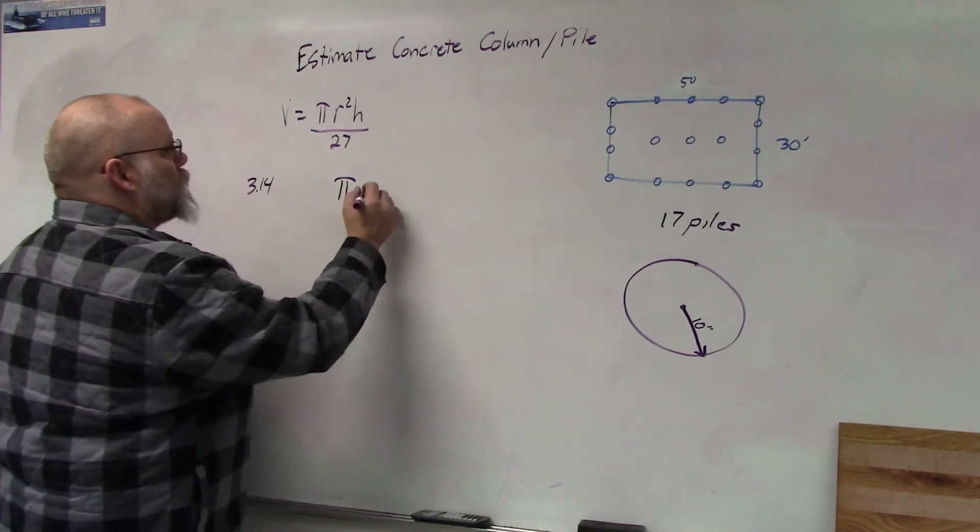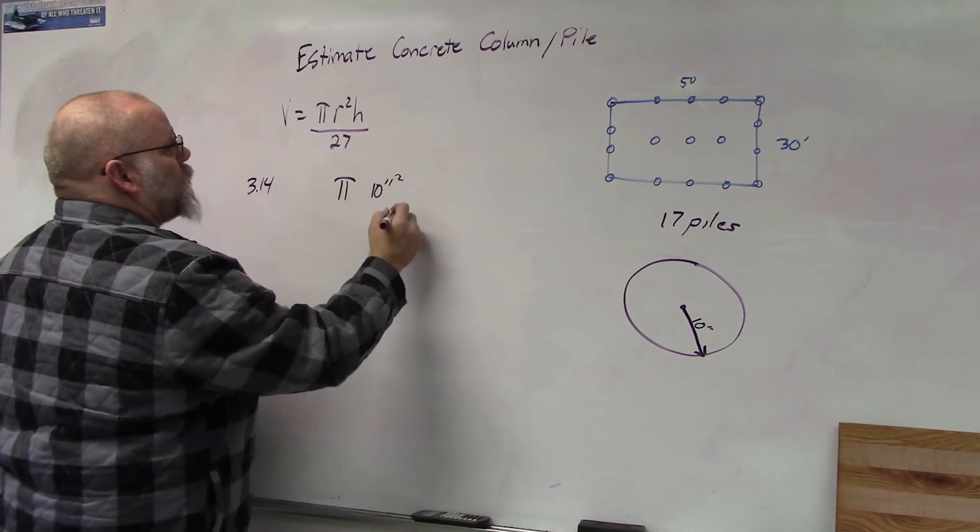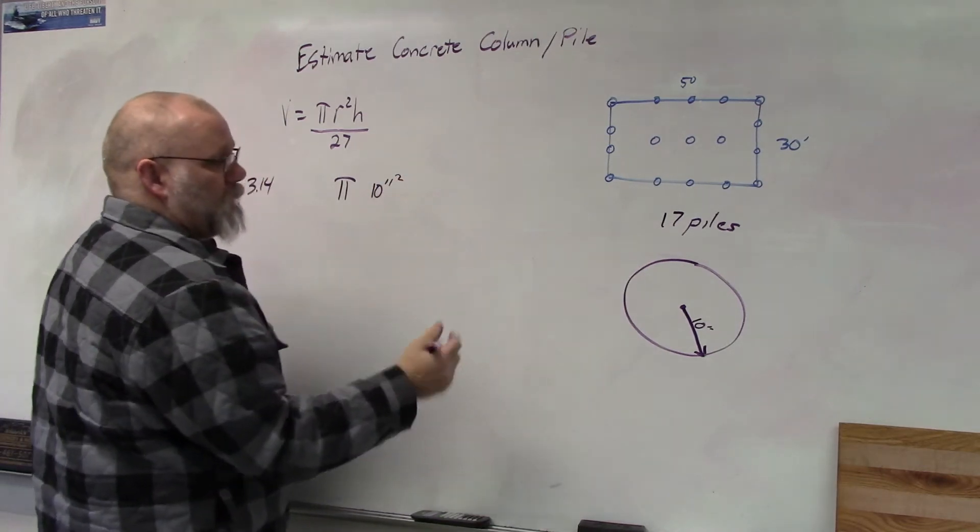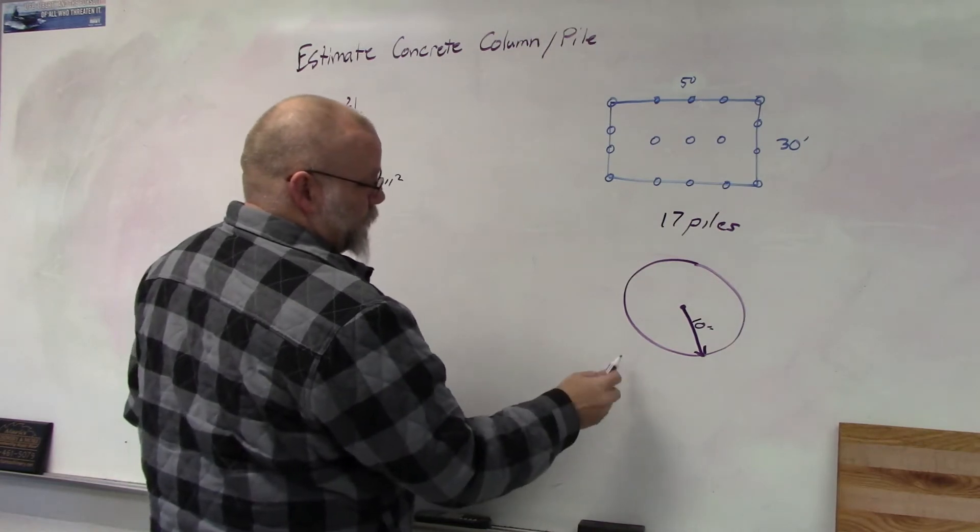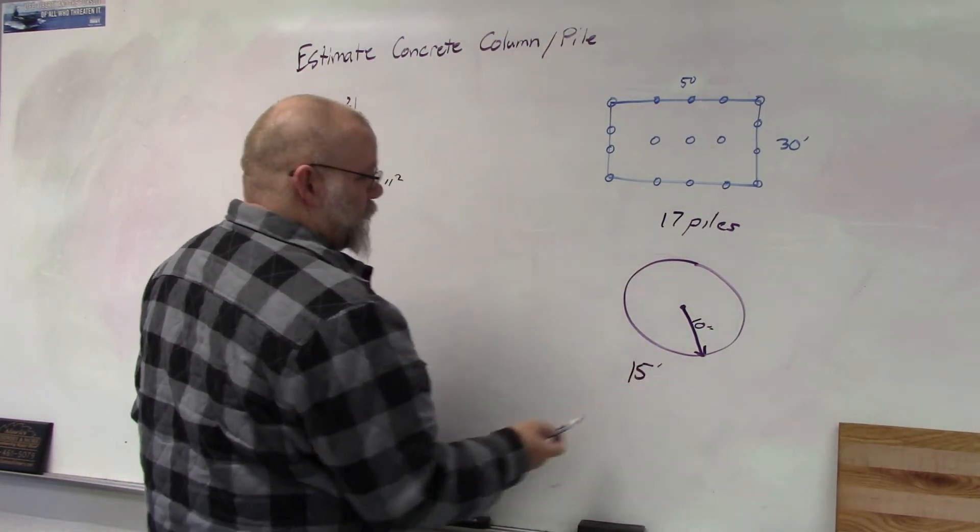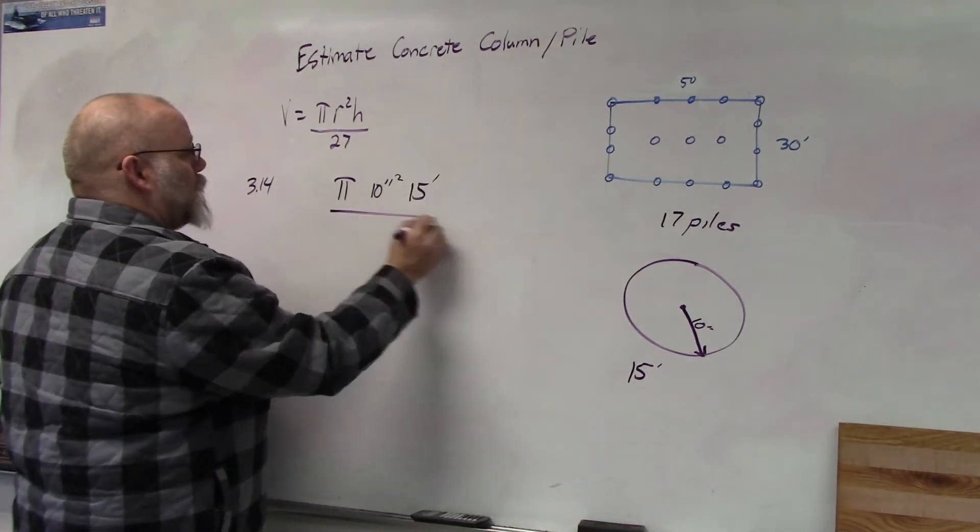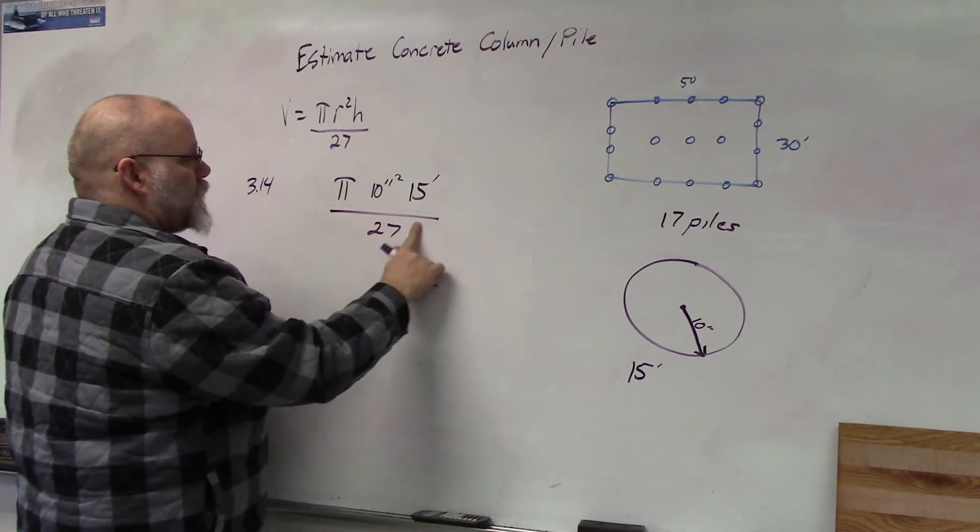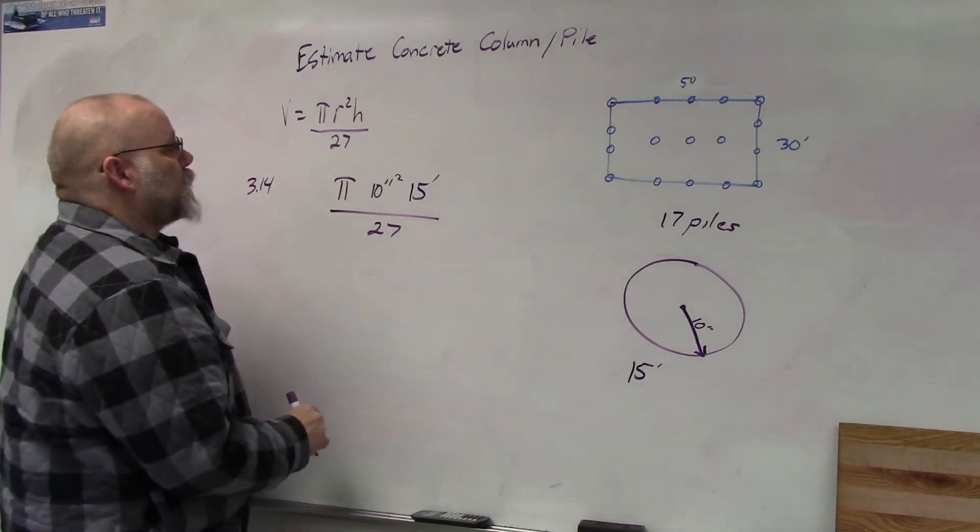So that would be 10 inches squared and then the height, let's say we're drilling them down, I don't know, let's say 15 feet. So that would be height and then we're going to divide by 27 so that we can convert it all into cubic yards.